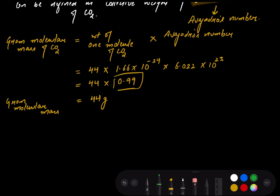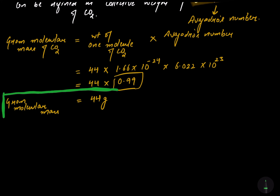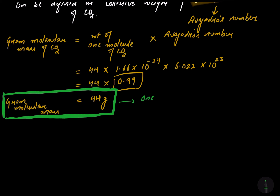Another point: this value is also called 1 gram molecule. Please do not confuse this with 44 grams — '1 gram molecule' is just a name. So when I say 1 gram molecule of CO2, that stands for 44 grams of CO2.